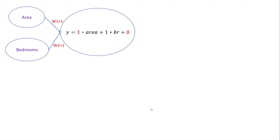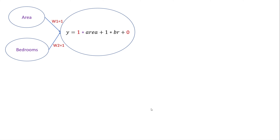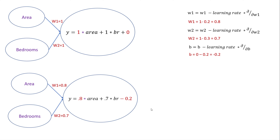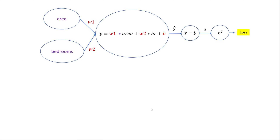We do the same thing for w2 and bias. After one epoch — going through all training samples — you compute the loss, calculate partial derivatives, and adjust the weights. For example, the new weights might become 0.8, 0.7, and bias −0.2. Then you do another epoch with the new weights, feeding forward all training samples, repeating until you reach the minimum error or global minima in gradient descent.